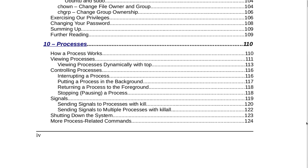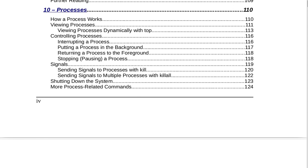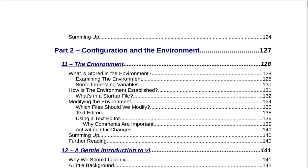Section 10 is Processes on page 110. That covers how a process works, viewing processes, viewing processes dynamically with top, controlling processes, interrupting a process, putting a process in the background, returning a process to the foreground, stopping and pausing a process, signals, sending signals to processes with kill, sending signals to multiple processes with killall, shutting down the system, more process-related commands, and summing up.